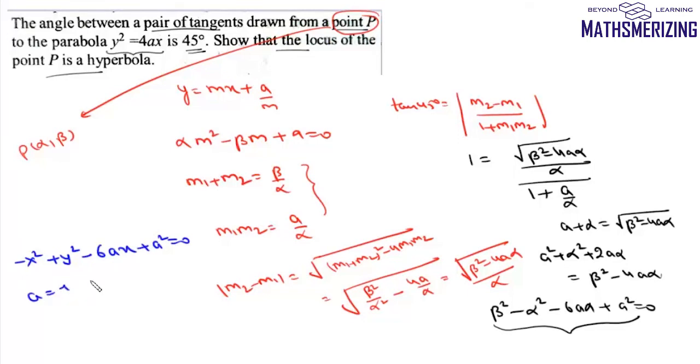Here A = -1, B = 1, and H = -3a. Since H² is greater than AB, this is a hyperbola. So the locus of point P is a hyperbola.